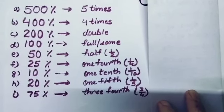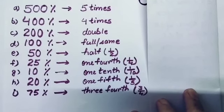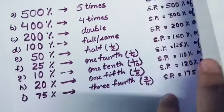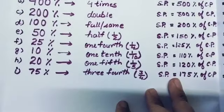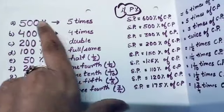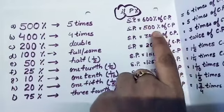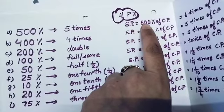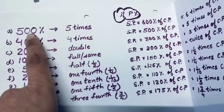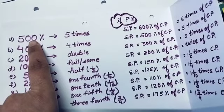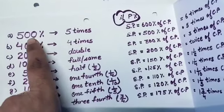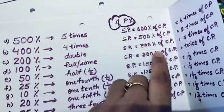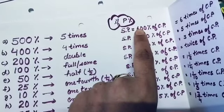To have ease with a percentage question, you must understand the following. If this percentage is a profit percent, what's gonna be the selling price? If your profit percent is 500%, your selling price is gonna be 600% of CP. The reason is you're getting the profit as 500%, so you are getting your invested money back and 500% extra — 100% plus 500% is 600%.